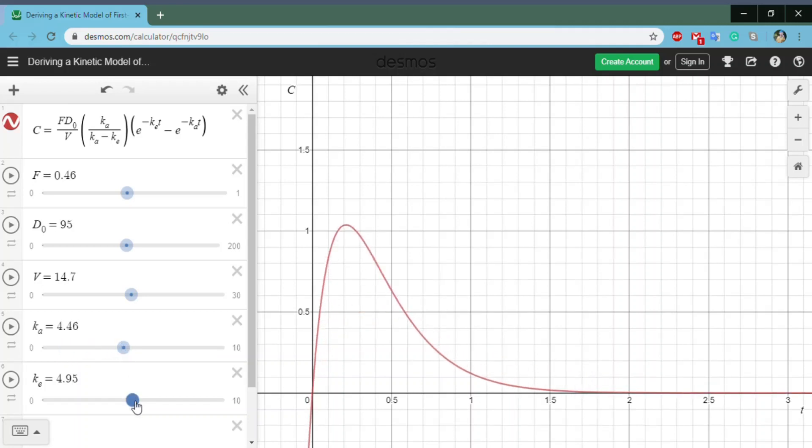Now, you can predict this for yourself. If you increase KE, you're going to get rid of the drug a lot faster, which means that you're going to start seeing the curve go more and more down and more to the left. It's kind of sagging a little bit.